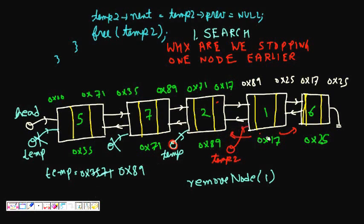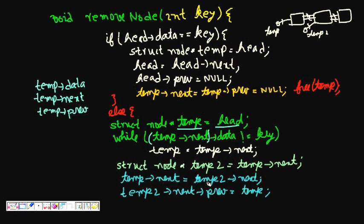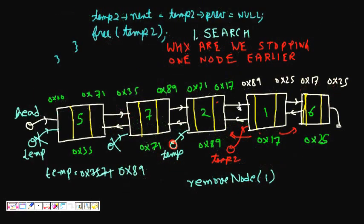Now how are we manipulating? We reorganize some of the pointers for temp and temp2. We do: temp->next = temp2->next. This means temp->next, which was 0x17, now becomes temp2->next which is 0x25. So we remove the old connection and replace it with 0x25.